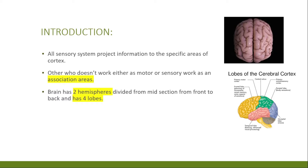The association area is responsible for complex aspects of behavior such as rage, thought, and memory. It occupies the largest area of the cortex. The brain is basically divided into two hemispheres.